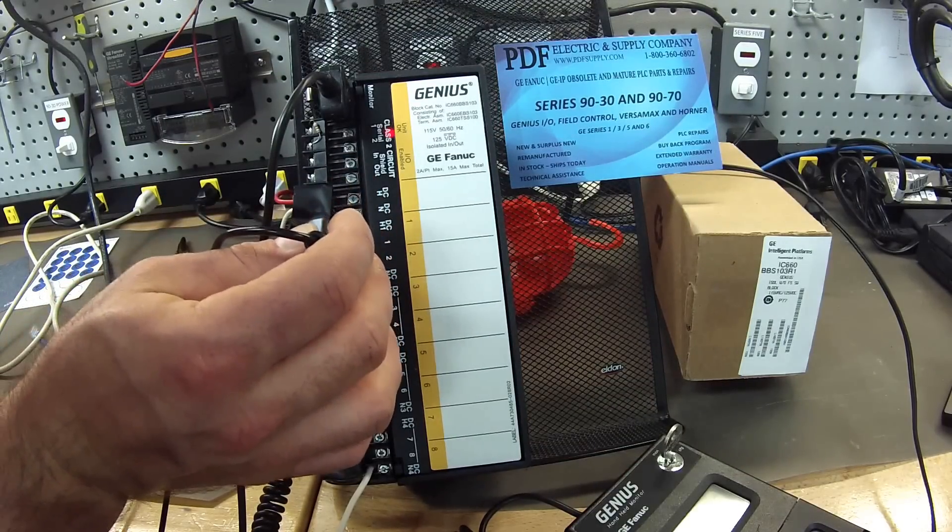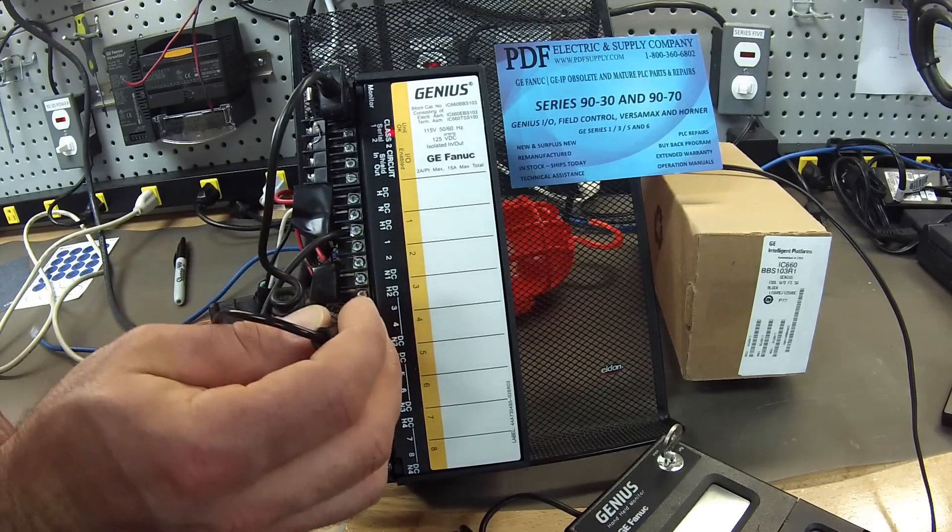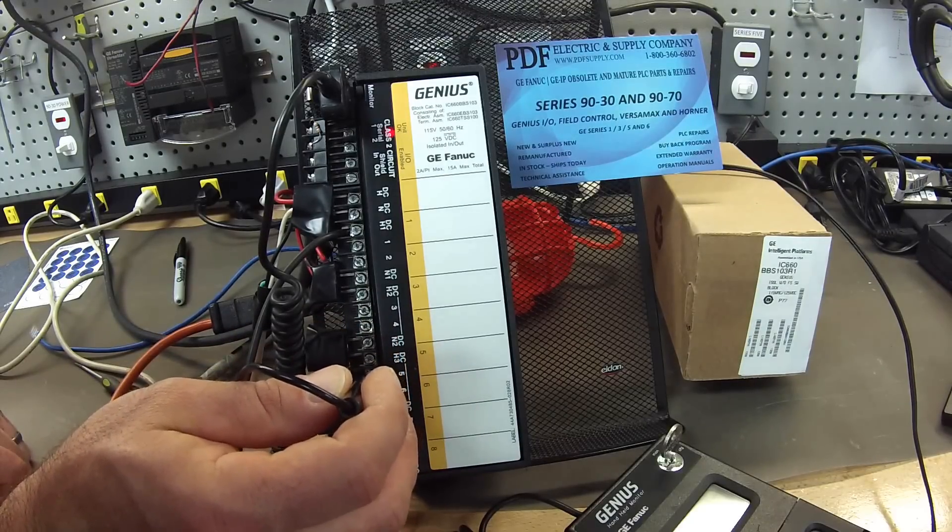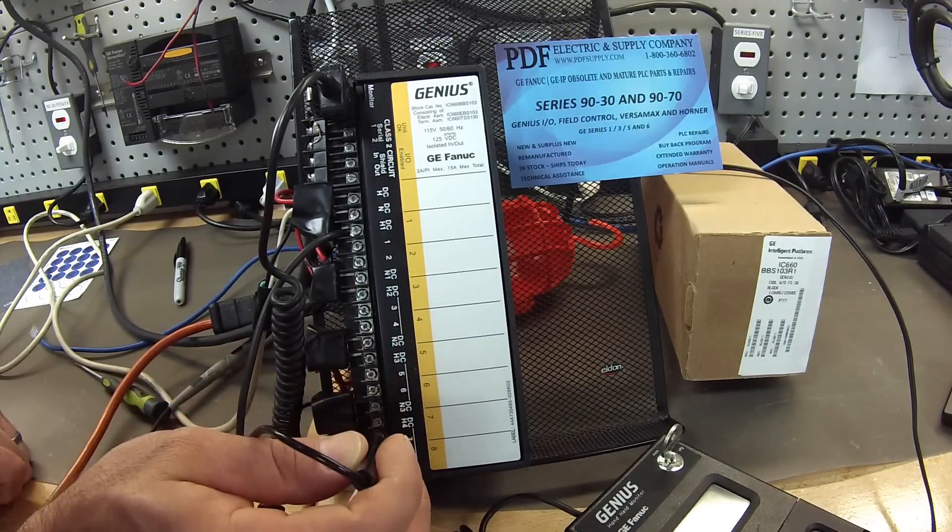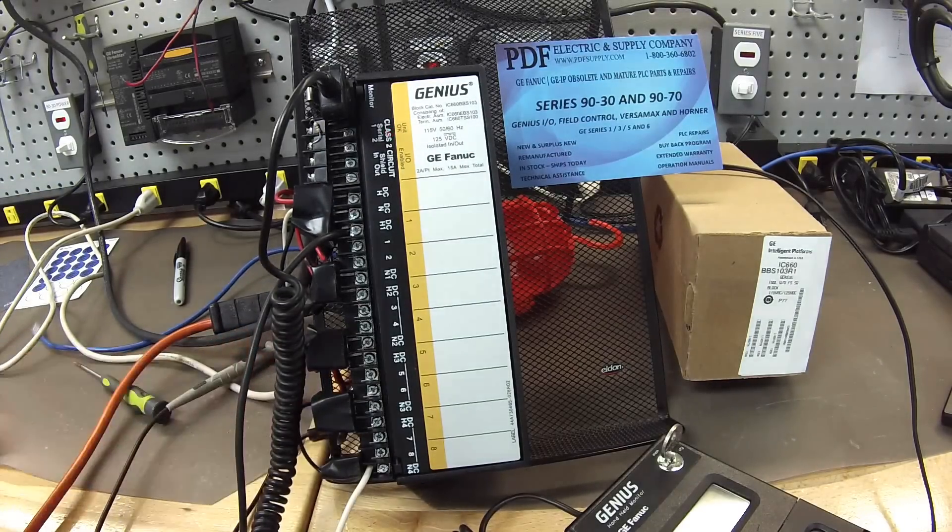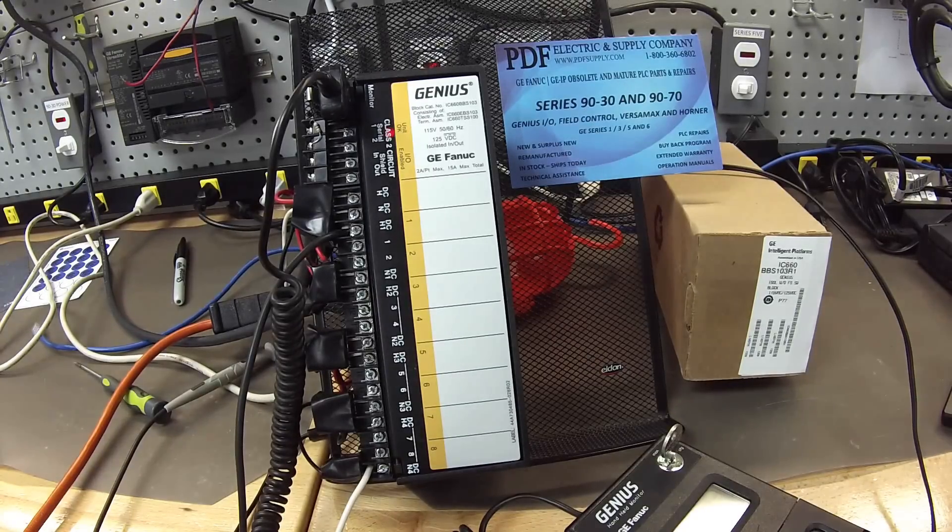So I'm going to just touch this to 1, 2, 3, 4, 5, 6, 7, and 8. So they're all truly off, and I'm satisfied that this is a good working block.